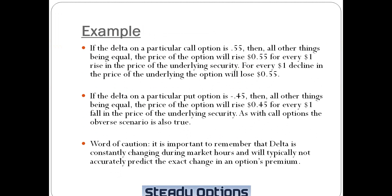Example: if the Delta of a particular call option is 0.55, or 55%, then all other things being equal, the price of the option will rise $0.55 for every dollar rise in the price of the underlying security. For every dollar decline in the price of the underlying, the option will lose $0.55. As with call options, the opposite scenario is also true for puts.